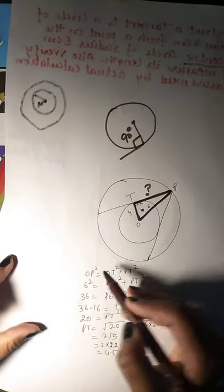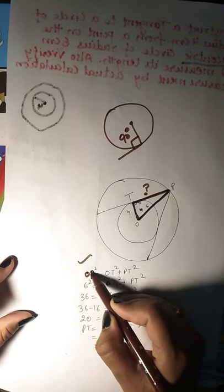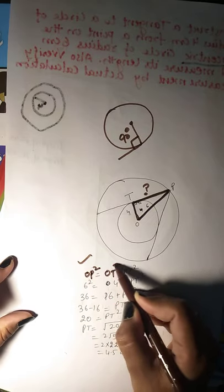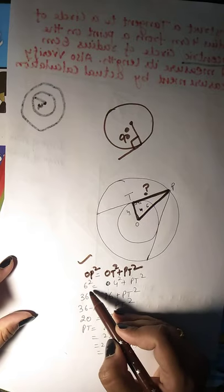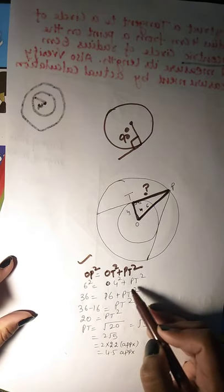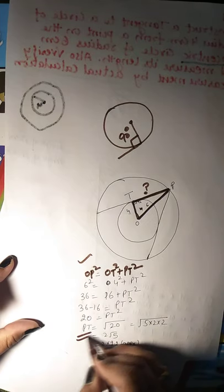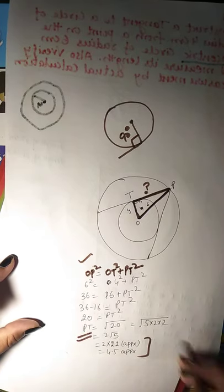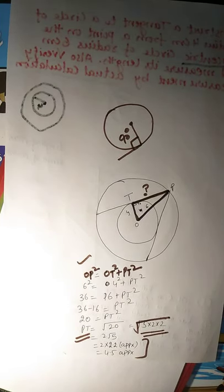Apply Pythagoras theorem. OP square equals to OT square plus PT square. OP value is 6 square, OT is 4 square plus PT square. 36 equals to 16 plus PT square. Do all the calculation and you will get PT as 4.5. You can do the calculation, okay?